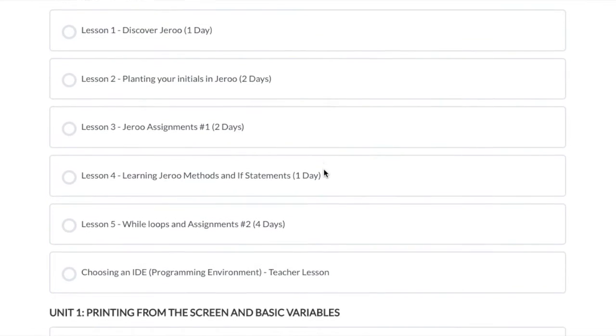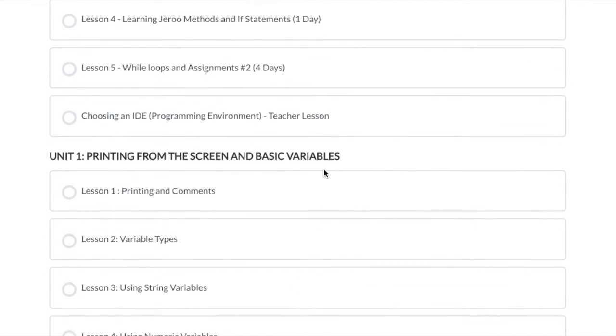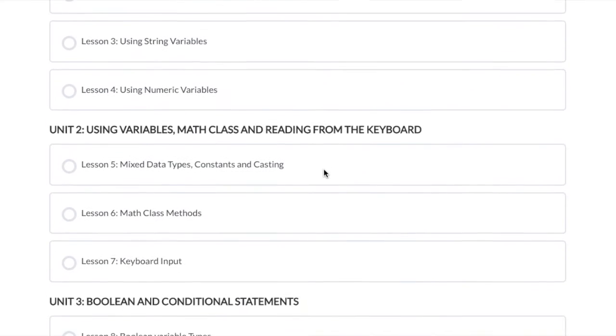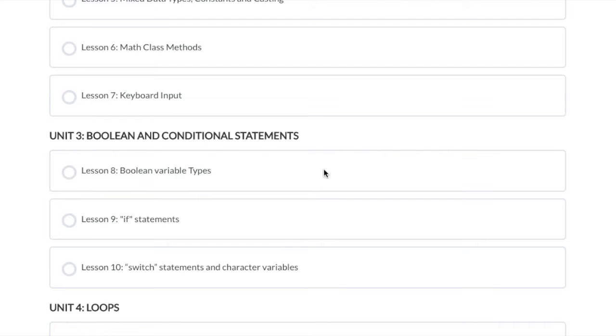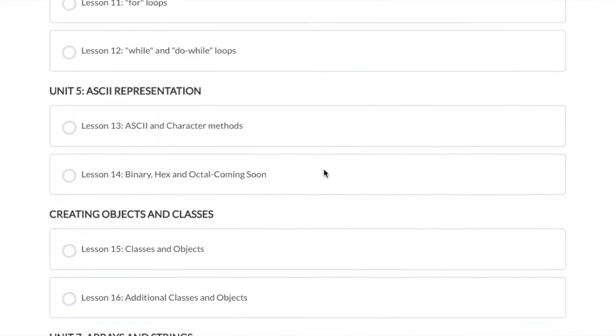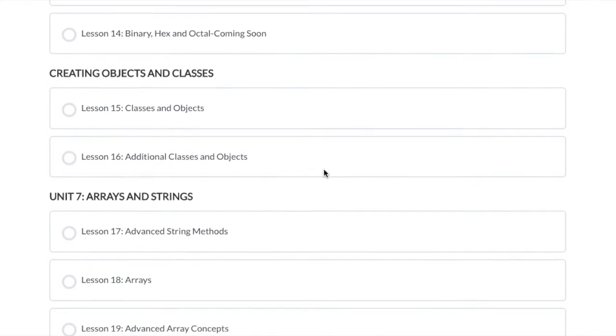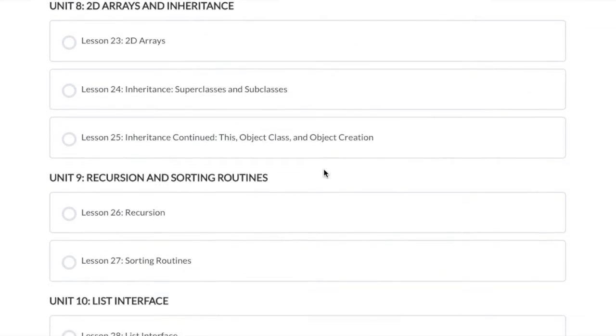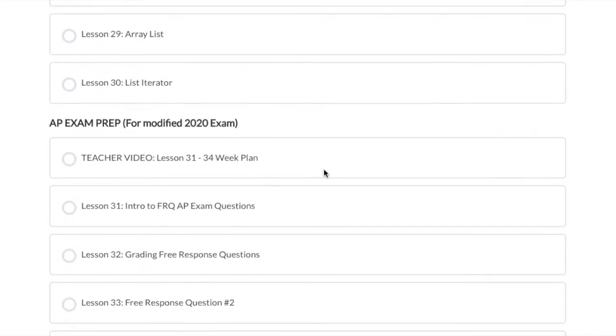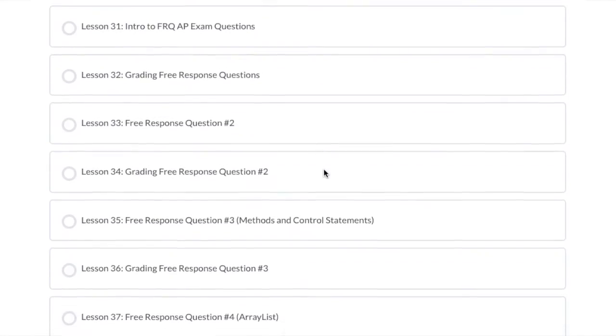The curriculum covers every topic that students will need to cover as part of the updated AP Computer Science A course that was introduced in 2019. It's also going to give them exam prep material that you can use to have your students ready and prepared to take the AP exam at the end of the school year.